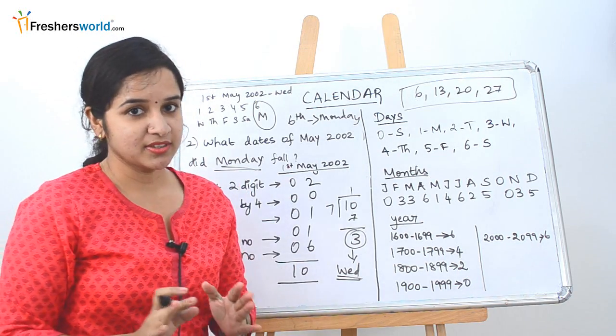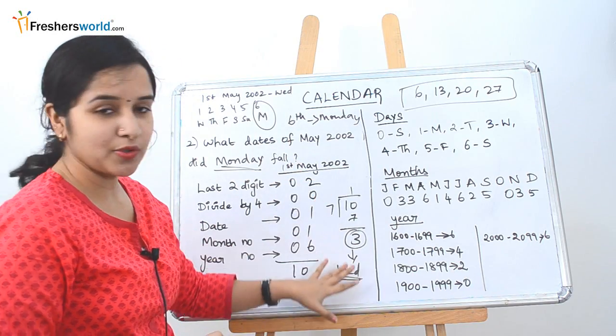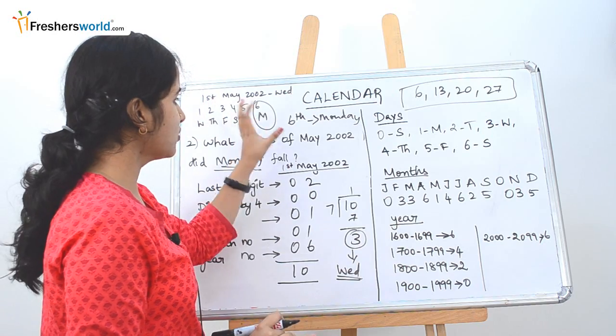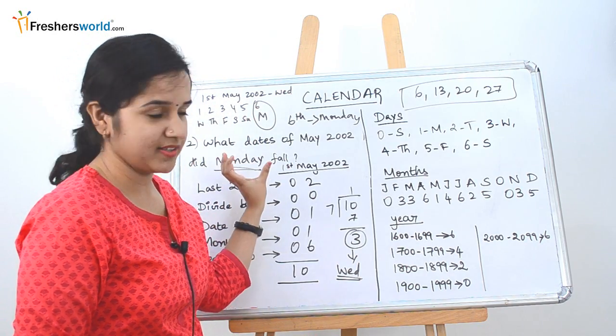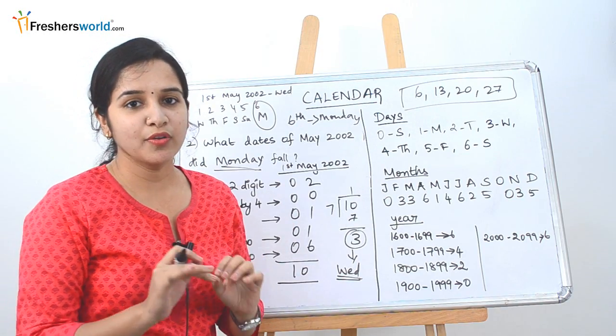So how did we do this? First, take the 1st of some month, whatever the month that they have given, follow the usual procedure. Then just put the 7 days of the week and then goes pertaining to the day that they have asked. Then you can add just 7 to it and find the rest of the other days. This is how you have to do this sum.